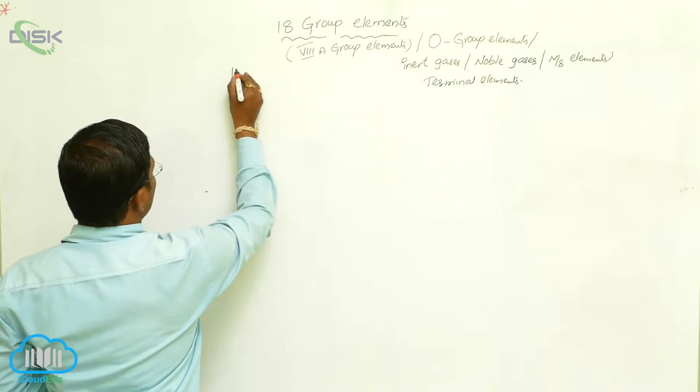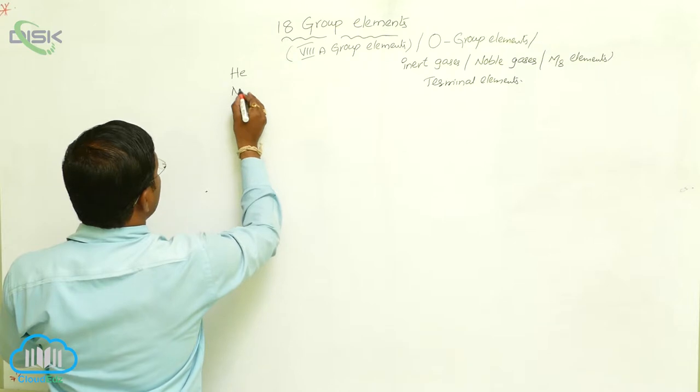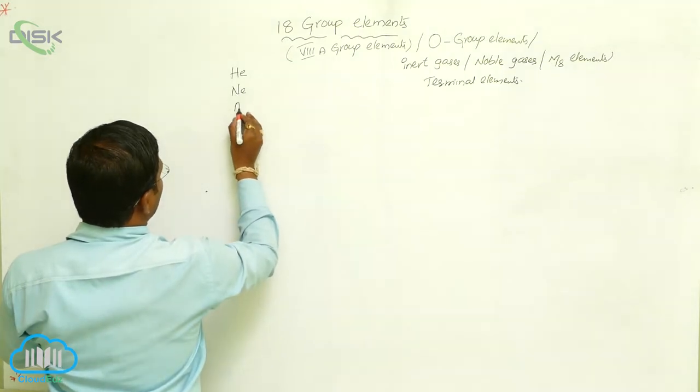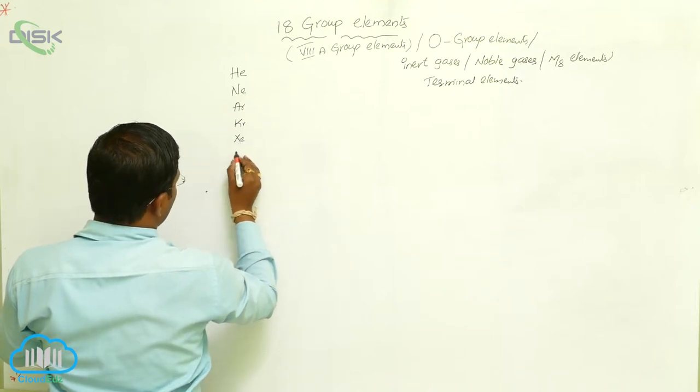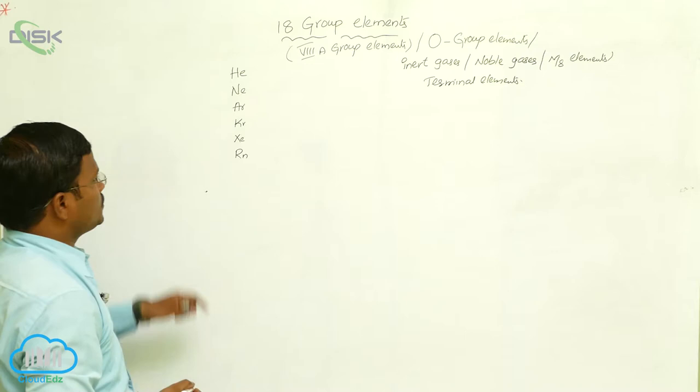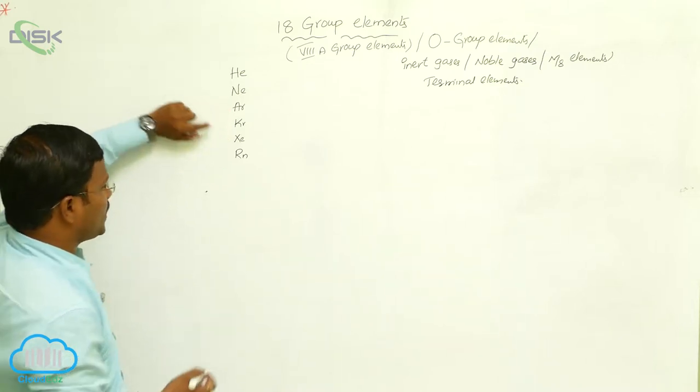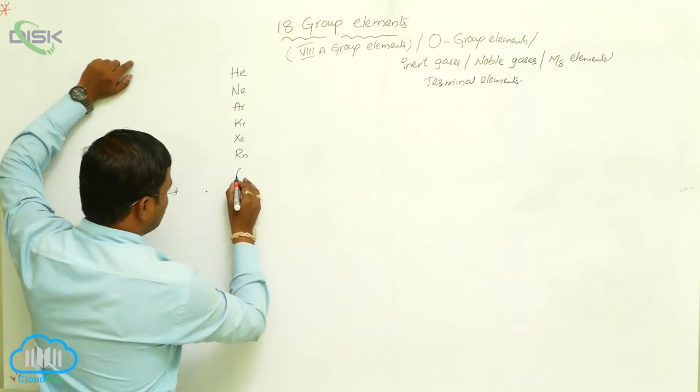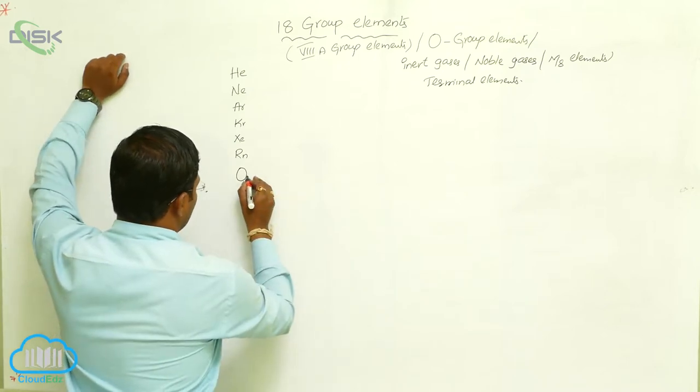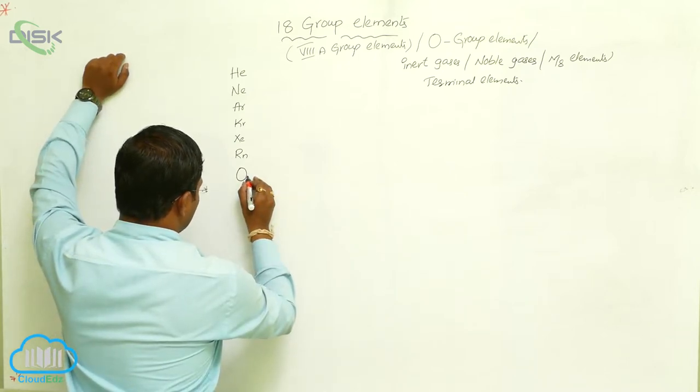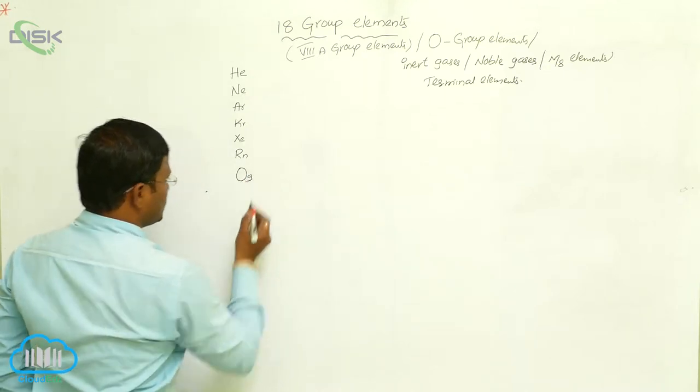Before going to this, which elements belong to this 18th group? Are Helium, Neon, Argon, Krypton, Xenon and Radon. So these elements, Helium, Neon, Argon, Krypton, Xenon, Radon and Oganesson. So it is the recently discovered element. I think it is OG, Oganesson.